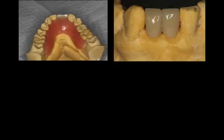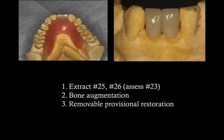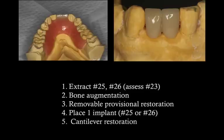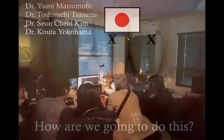The treatment plan: extract number 25 and number 26, assess number 23 at the time of surgery, perform bone augmentation or bone grafting at the same time, place a removable provisional restoration — what we call a flipper — and after a healing period, place one implant at either the number 25 or 26 position, whichever bone site is better, and eventually restore with a cantilever. Now, what is the sequence? What is the flap design? Let me show you how all of this worked.